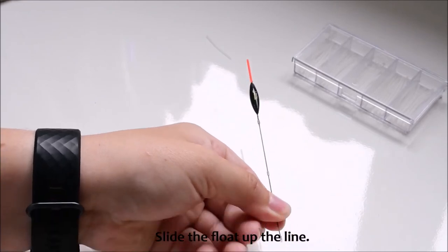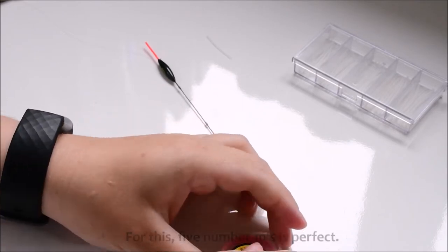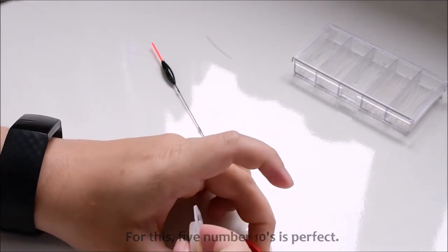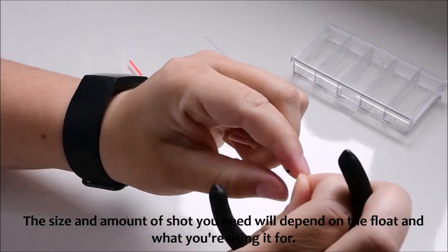Slide the float up the line. Grab the relevant shot you need for your floats. For this, five number 10s is perfect. The size and amount of shot you need will depend on the float and what you're using it for.